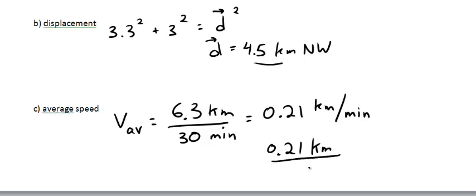0.21 kilometers per minute, that's the same as writing it this way. Multiply by a conversion factor, which is 60 minutes is the same as one hour. Minutes cancels, and we get 12.6 kilometers per hour.